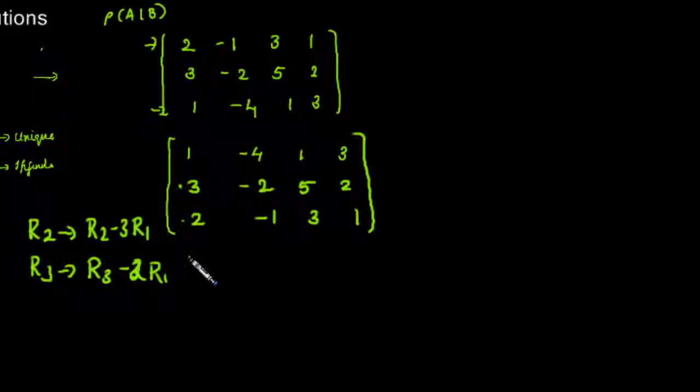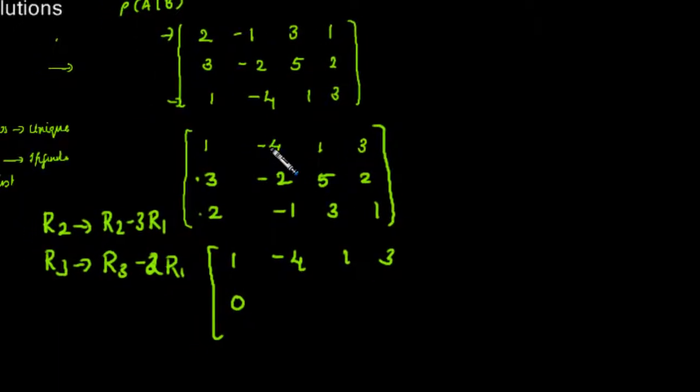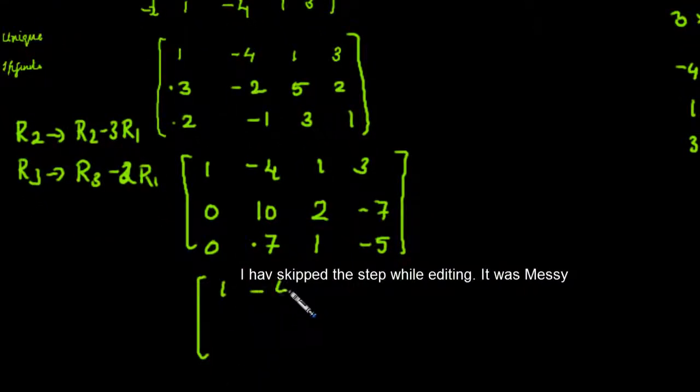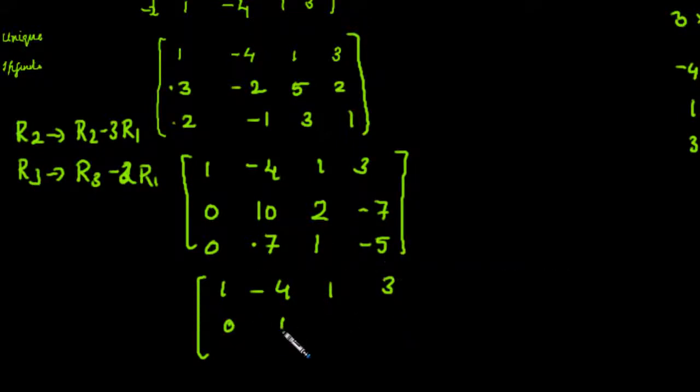The second row will be 0, -2 minus 3 times -4. Now 1, -4, 1, 3; 0, 10, 2, -7. We have to multiply: 10R3 minus 7R2 to make this element 0. So we have 0, 0, the element here will be 10 times 2 minus 7 times 2, that is 14.